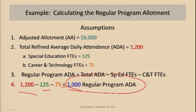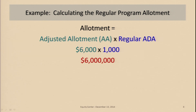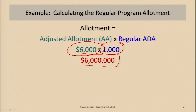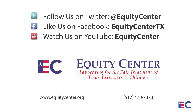To do the calculation — one simple step — you take your adjusted allotment and multiply it by your regular program ADA, after you've taken out the FTEs for special ed and career and technology. Multiply those two together, and that is your regular program allotment. Simple as that. And that concludes this session.